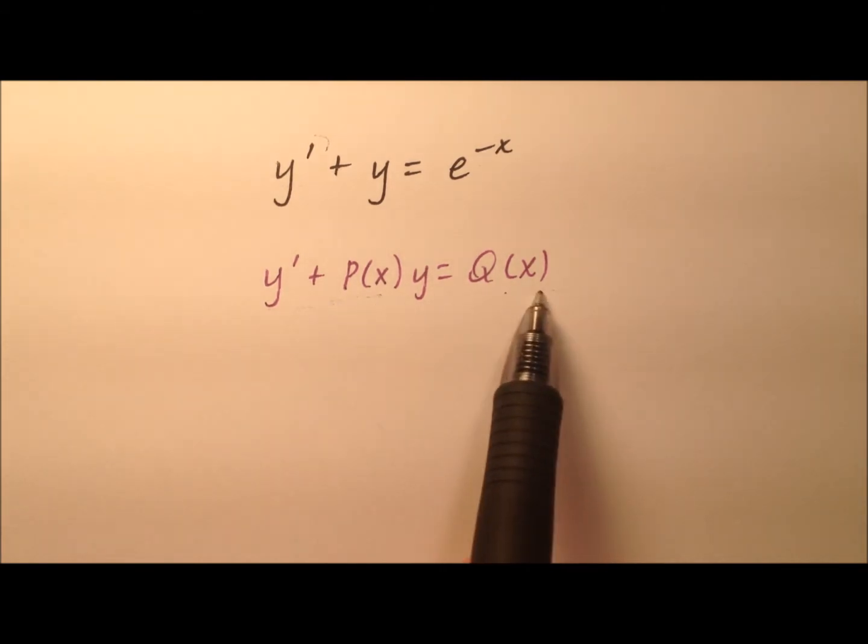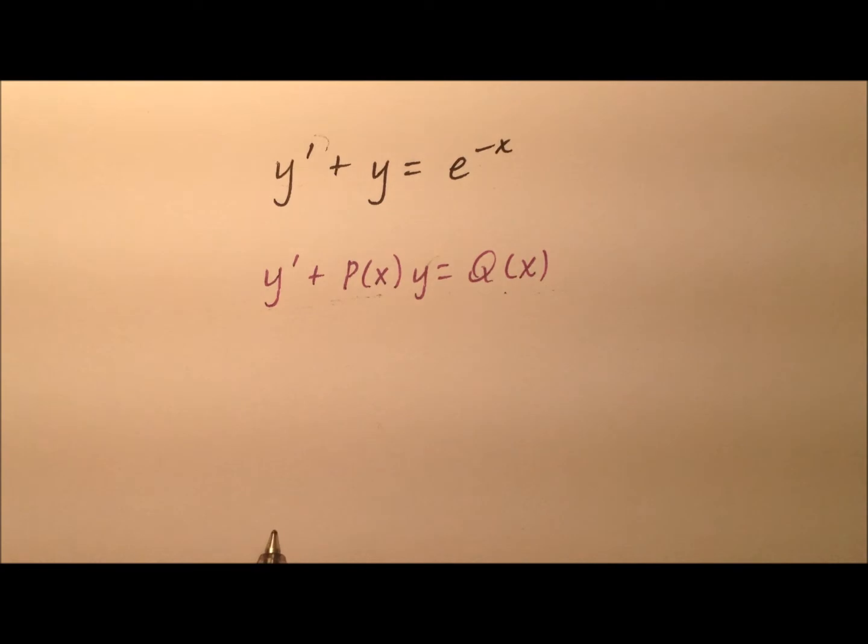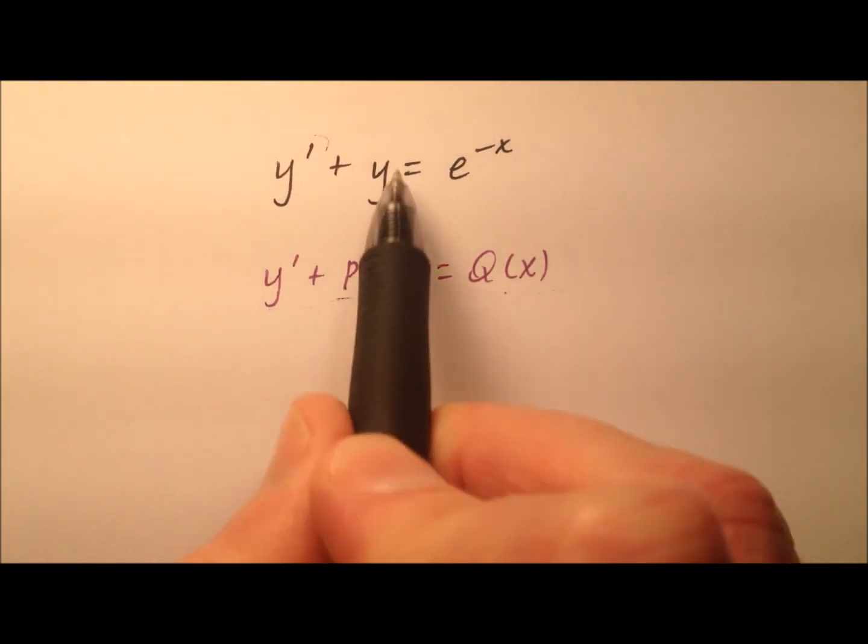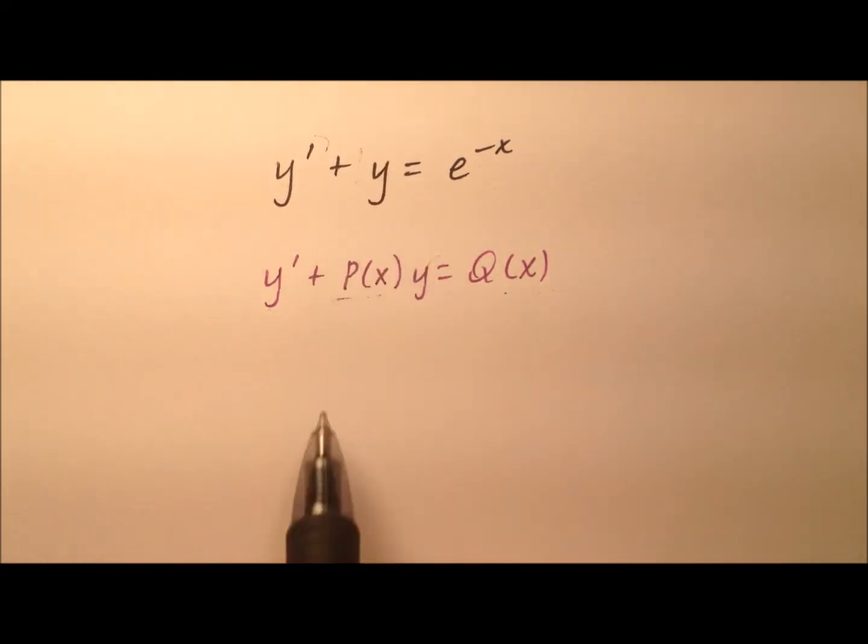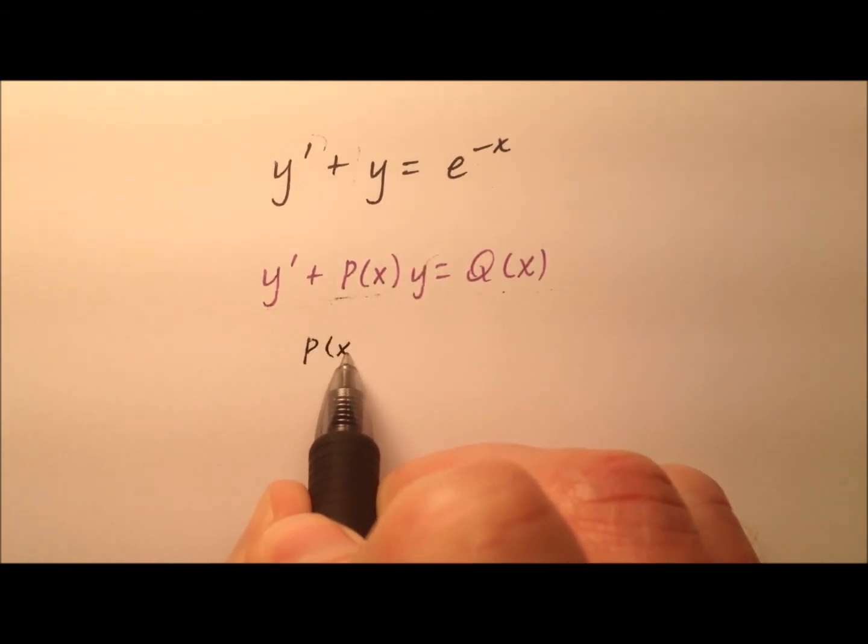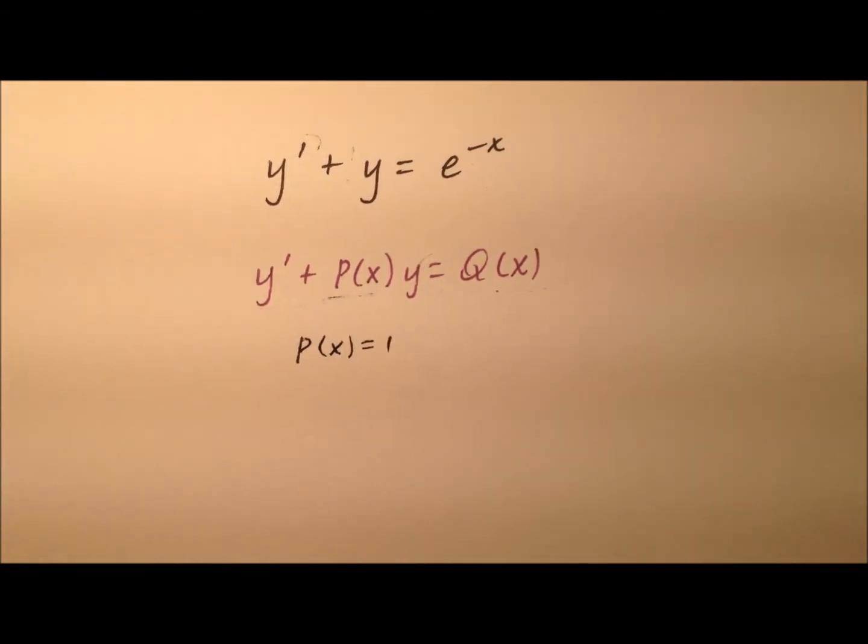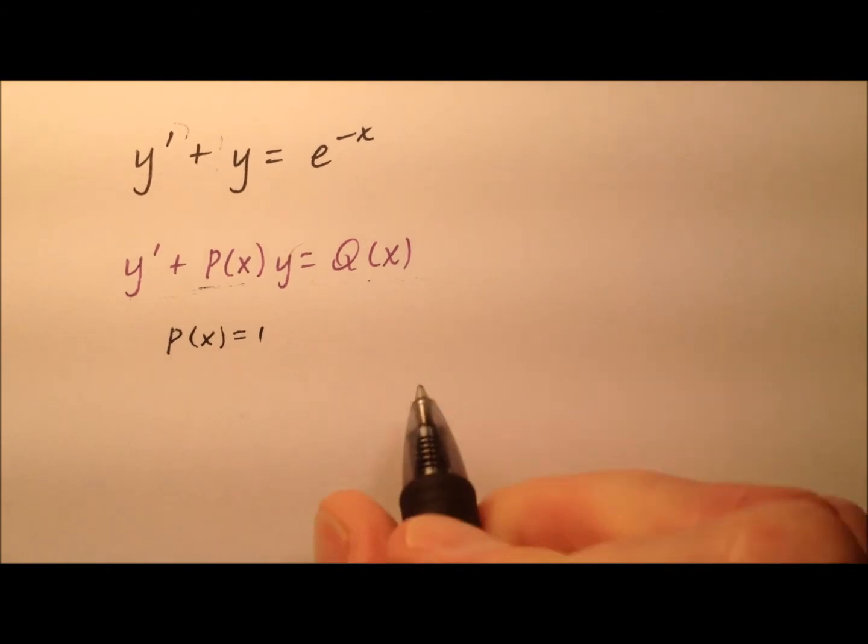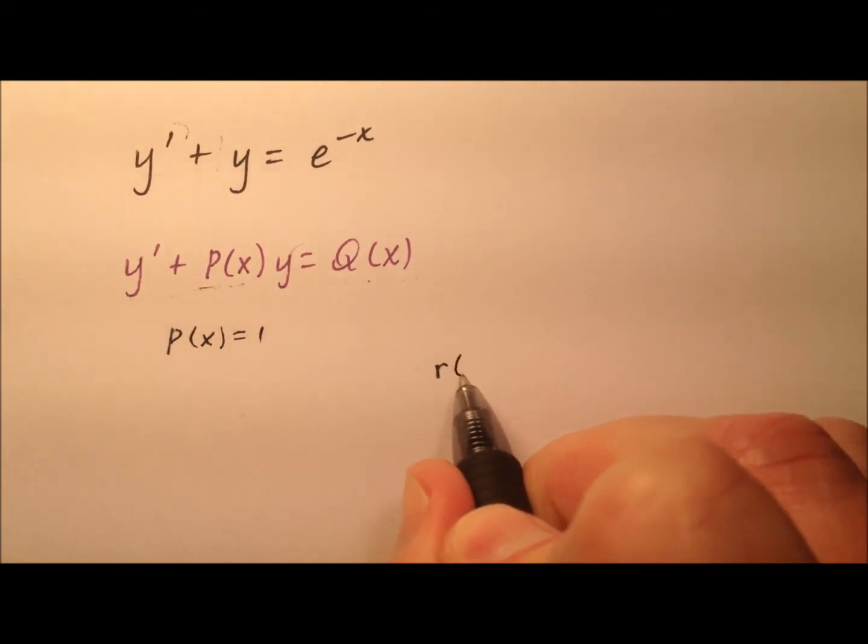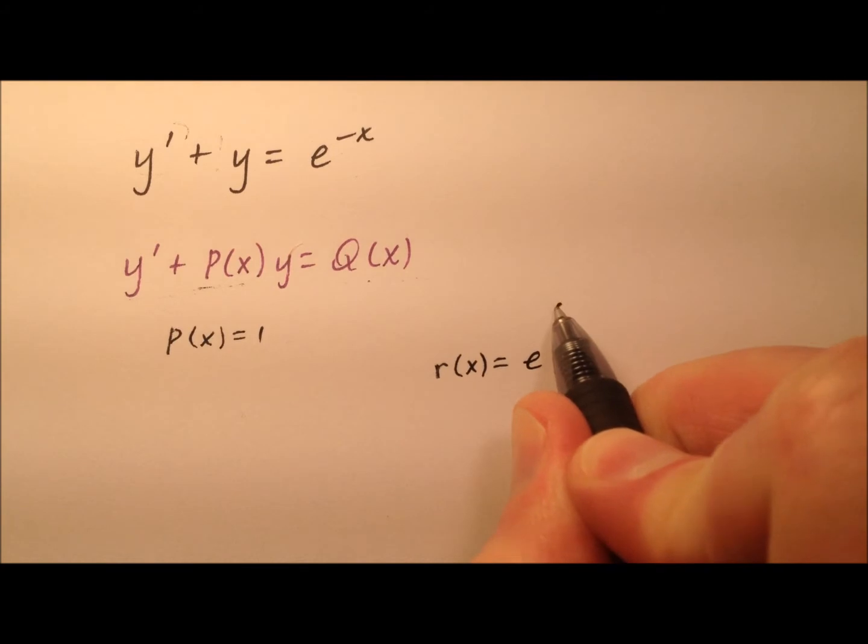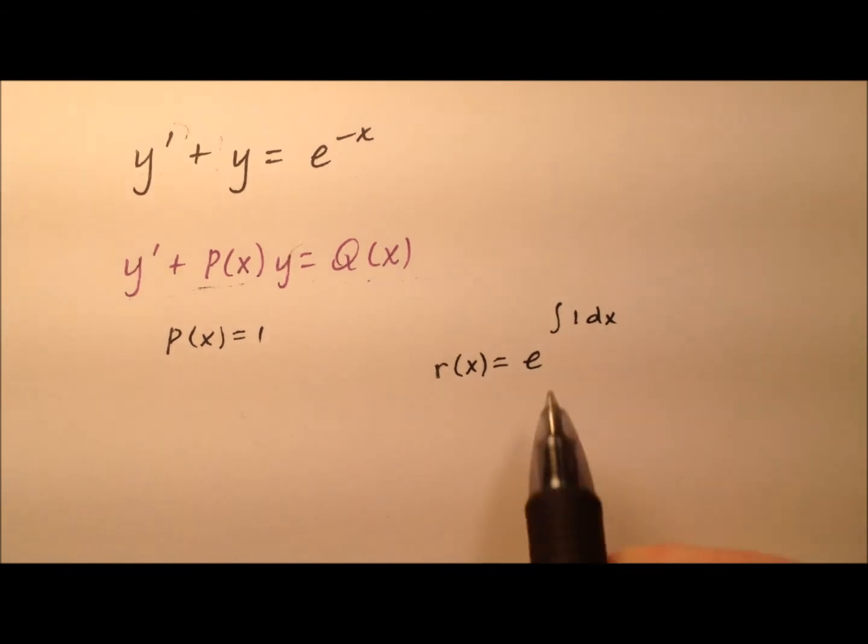So in our example, it looks like p(x) is just going to be 1, so p(x) = 1, which means our integrating factor will be pretty easy to find. So let's call our integrating factor r(x), and that equals e to the power of the integral of p(x) dx, so that's just 1 with respect to x. And this integral is very straightforward, it makes our integrating factor e^x.